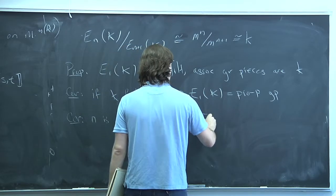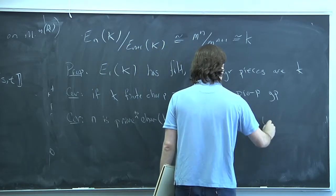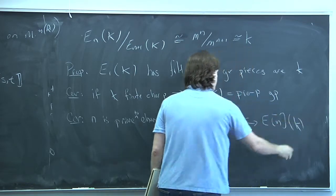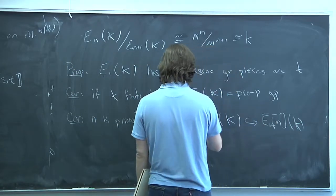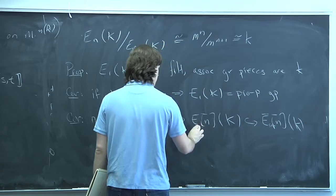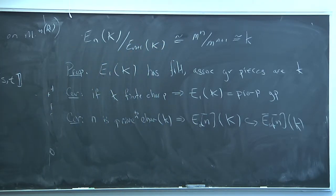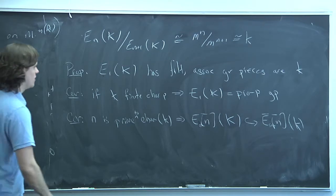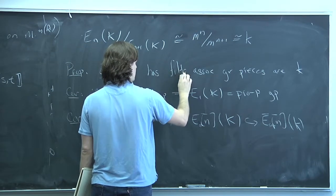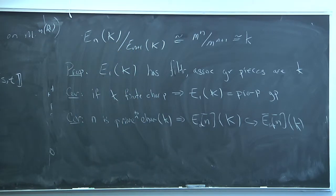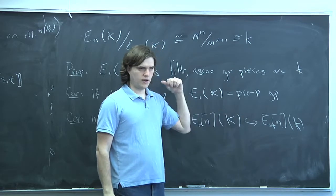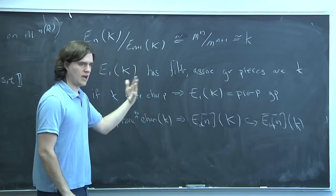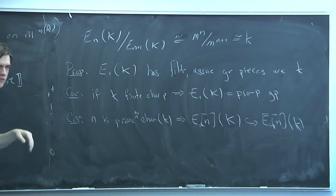Another corollary: if N is prime to the residue characteristic, then the reduction map from E₀ to Ē_sm is injective on N-torsion. The reason is that the kernel is E₁, which is made up of p-power torsion. If you have a subgroup of order prime to the characteristic, it can't intersect E₁, so it has to inject. This re-proves what we proved in the smooth case, but now it holds more generally.